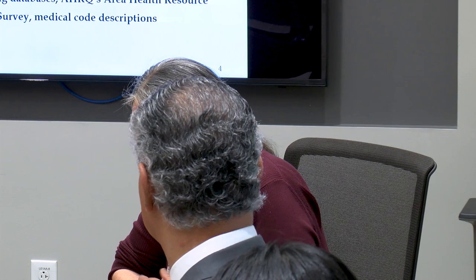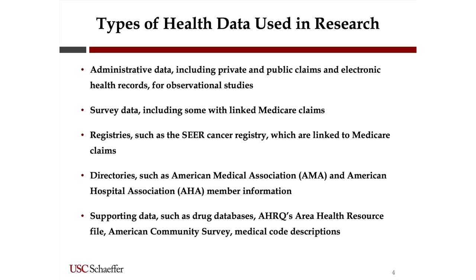We also use survey data, including some with linked Medicare claims. There are registries, such as the SEER Cancer Registry, which provide information about cancer patients and links to their Medicare claims. There are directories useful to look up information about physicians, such as the AMA directory, or hospitals, the AHA directories. There's also lots of supporting data — drug databases, AHRQ's area health resource file for contextual data like how many beds in a county — and medical code descriptions for diagnoses, procedures, drugs, and lab tests, all of which have their own series of codes that get updated periodically.